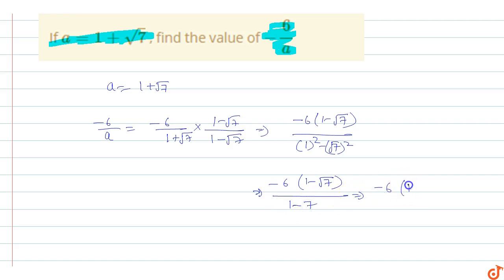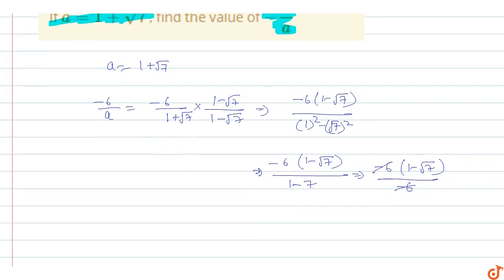So minus 6 and minus 6 cancel out. So my answer, minus 6 upon a key value 1 minus root 7, 1 minus root 7.